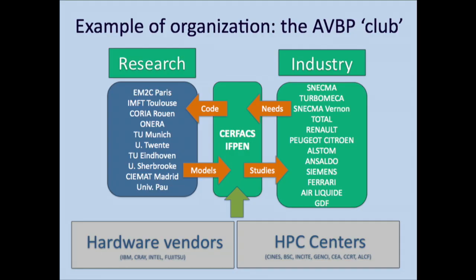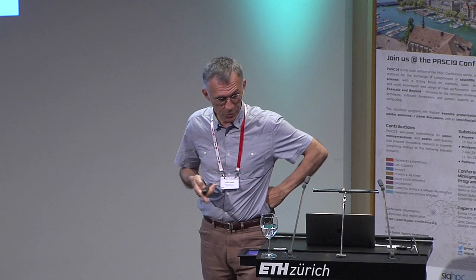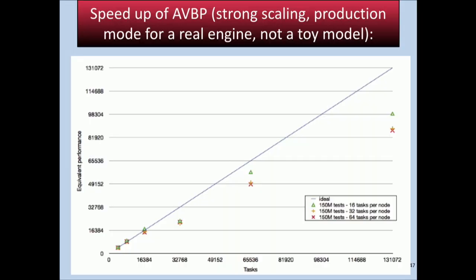The organization is this one: the owners of the code are here, the people in industry using the codes are here, and the laboratories with direct access to the code are here. It's not an open source code, but a lot of people actually work in it. We also work with hardware vendors and HPC centers. A typical strong scaling speedup goes up to 130,000. We achieve a speedup of 100,000 for real production cases — not cases built up for a nice speedup curve.